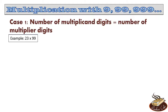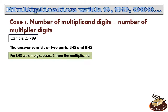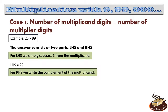Now in this case, the answer always consists of two parts, the LHS and the RHS. So how do we find the LHS? For LHS, we simply subtract 1 from the multiplicand. Our multiplicand here is 23. So to get the LHS, we simply subtract 1 from 23. 23 minus 1 is obviously 22. So the LHS is 22. Finding RHS is equally easy. For RHS, we write the complement of the multiplicand. The complement of 23, as you know, is 77. So RHS is equal to 77. So our answer is 2277, that is LHS followed by the RHS.